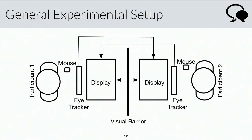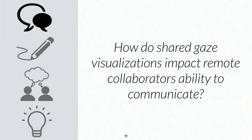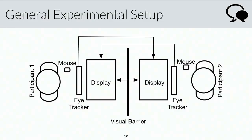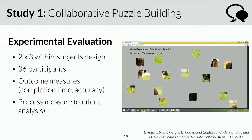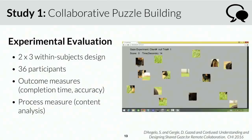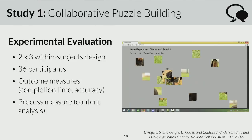First: how do shared gaze visualizations impact remote collaborators' ability to communicate? To answer this, I developed a system to cross-project gaze data between collaborators in real time — taking your gaze coordinates from an eye tracker and displaying them on your partner's screen in real time. Collaborators are in the same room but separated by a visual barrier to simulate a remote environment. In this first study, I asked participants to collaboratively solve a puzzle with and without the ability to see where their partner is looking. You can see participants putting together a puzzle of a puppy, with a participant's gaze information illustrated as a gaze cursor moving around on the screen.